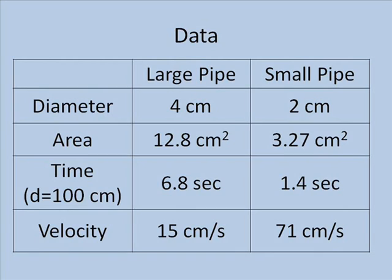The smaller pipe had a diameter of 2 centimeters and a cross-sectional area of 3.27 square centimeters. The marker ball required only 1.4 seconds to move the same distance through the smaller pipe, and was therefore traveling at 71 centimeters per second.